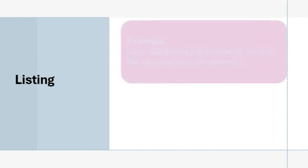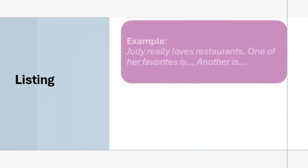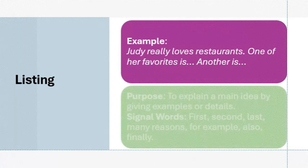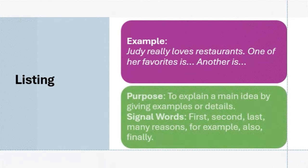First up: listing. This pattern is useful when you need to provide a series of points or examples. Think of it like a list that's part of a paragraph — each sentence adds another item or idea to the list. For instance, if you're talking about Judy's favorite restaurants, you'd mention each one with some detail, like, first, she loves Italian food. Another favorite is sushi. Notice how each sentence builds on the last, giving the reader more information in a clear, step-by-step manner.